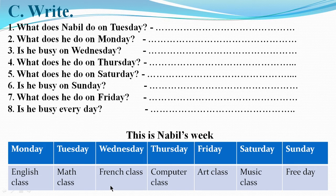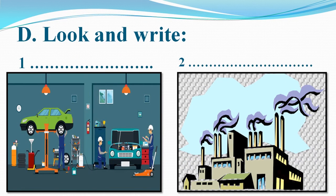Yes, good. Let's move to exercise D. For exercise D, look and write. Here you have places and you are going to identify each place. What do you see in this picture? Try to identify this place. Also, what do you see in this picture? It's a place, by the way.